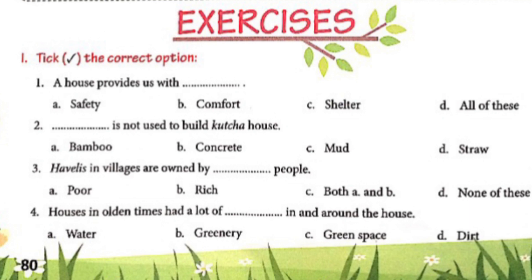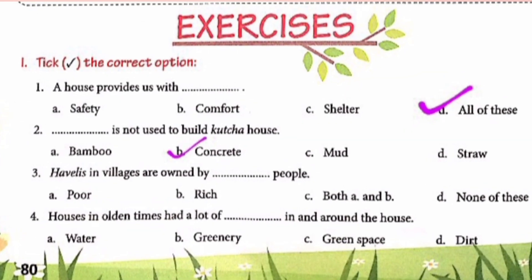Question 1: A house provides us with — (a) safety, (b) comfort, (c) shelter, (d) all of these. The answer is option D: all of these. Question 2: Dash is not used to build a kaccha house — (a) bamboo, (b) concrete, (c) mud, (d) straw. The answer is option B: concrete. Concrete is used to build pakka houses.